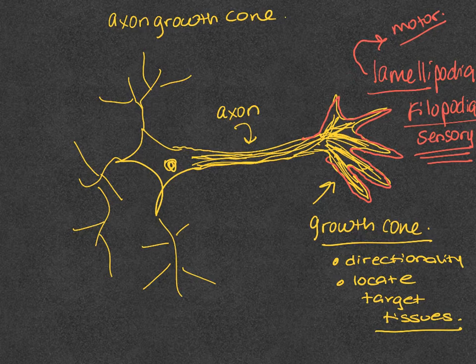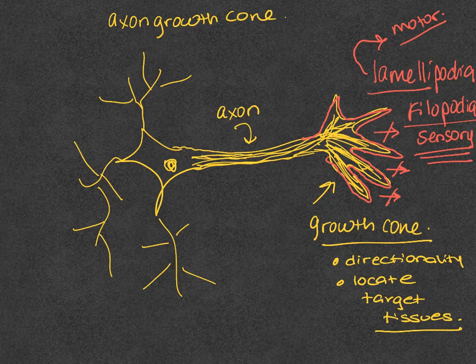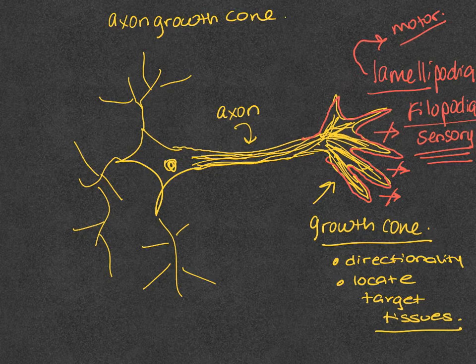So one way that we can look at it is that this growth cone does not move in one direction. This growth cone has these lamellipedia and these philipodia that allow the growth cone to feel its way along the substrate, which would be the target tissue.